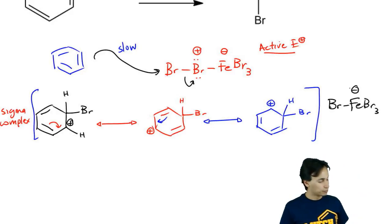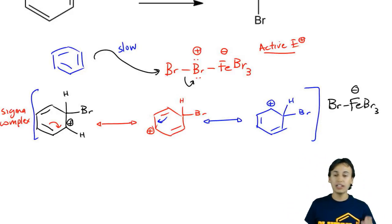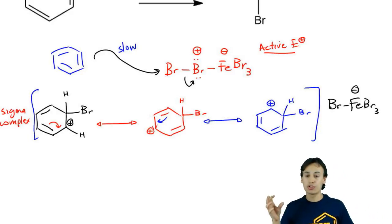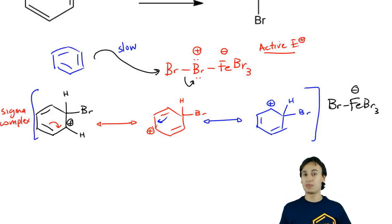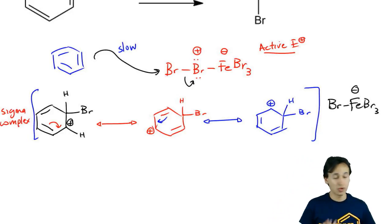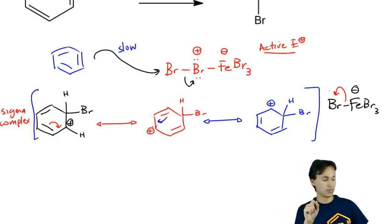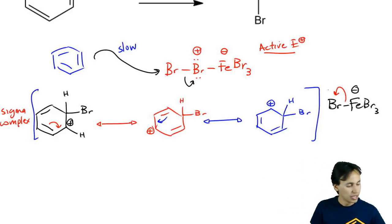We've still got this FeBr3 that has an extra Br on it and the whole thing is negatively charged. How is that going to react? We can use the electrons from the bond, from the extra bond to eliminate the hydrogen. Now, to me personally, the mechanism that makes the most sense, and you're going to see this a lot in this chapter, is that the bromine grabs its electrons, says hey, I'm taking them back and then it gives its electrons to the H. Actually, don't draw this. Use your eraser really quick.